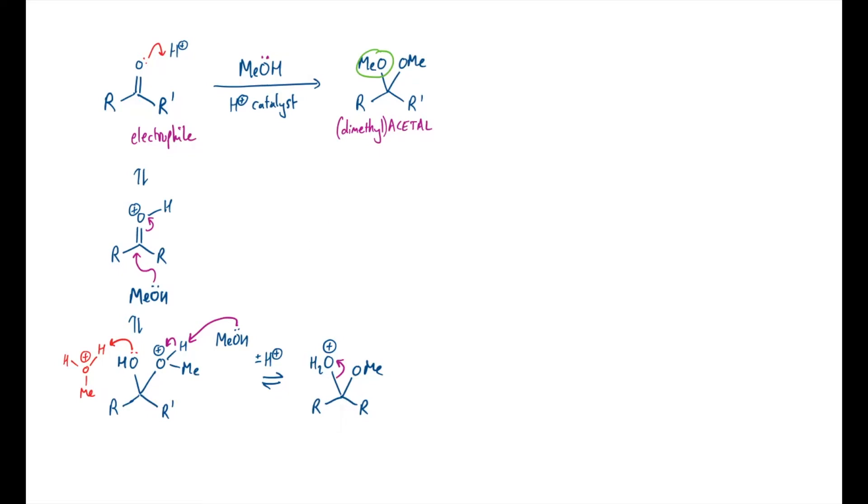So with that water leaving group going, I can stabilise the carbocation that remains using the other oxygen's lone pair. This step is also reversible to generate a species that looks like this, an oxycarbenium ion, and we note that that's got the similar properties as before, this is like an activated carbonyl group. So as in the earlier step this is a good electrophile.